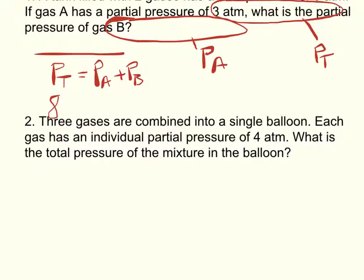Now let's plug in our numbers. Our total is 8. Partial pressure of A is 3. We don't know B. And then this is simple solving. Subtract 3 from both sides. You get partial pressure of B equals 5 atm. Final answer.